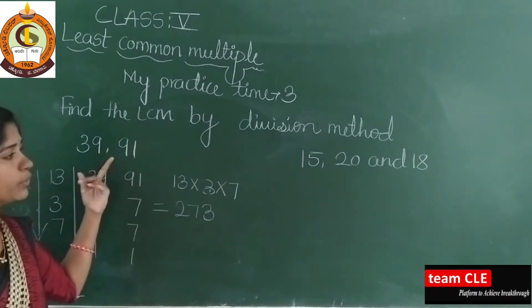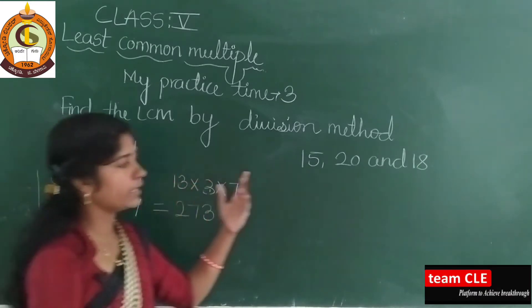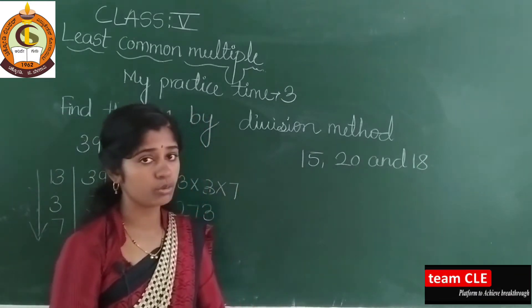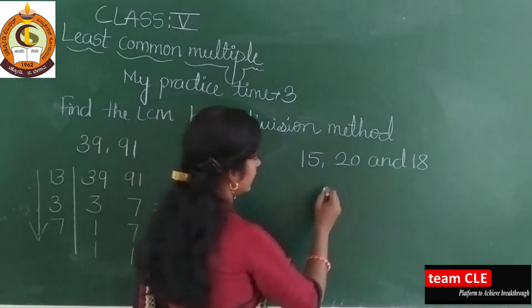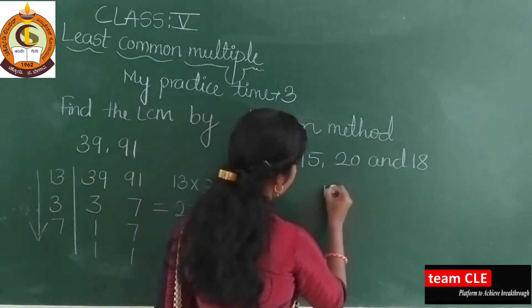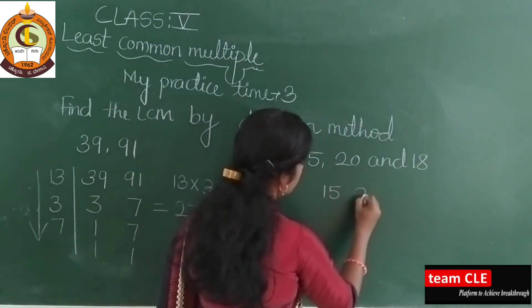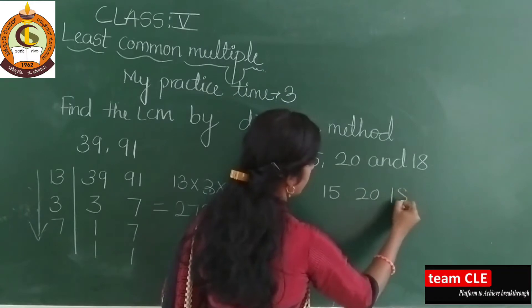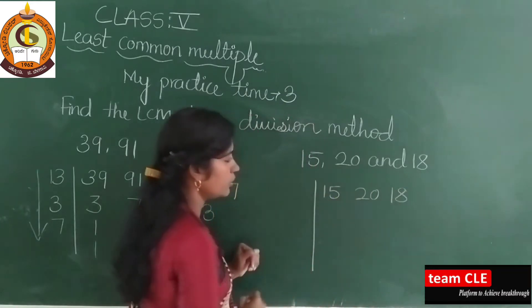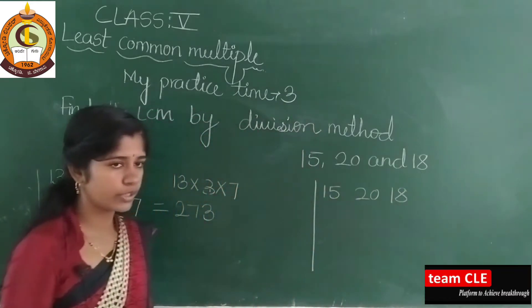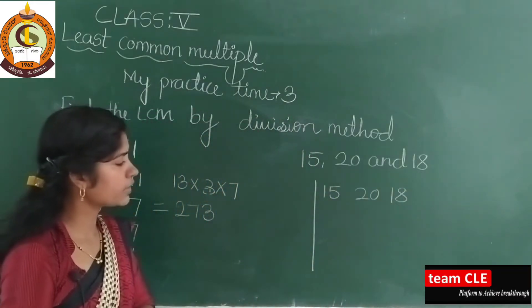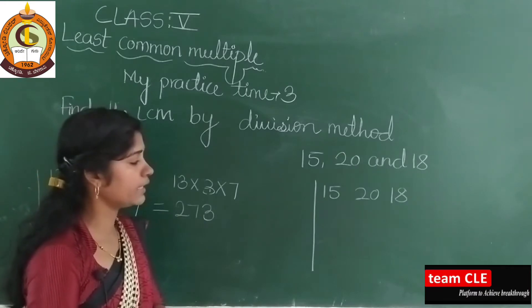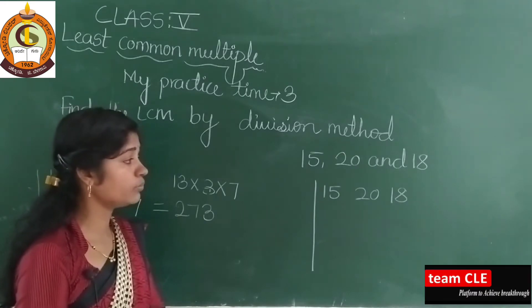Here you have only 2 numbers, but in the next example they have given 3 numbers. Then how to do this? I will take here 15, 20, and 18. You take all digits together. So check: 15, 20 and 18 — which table are they in?